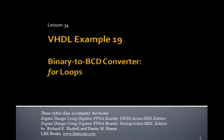This is Lesson 34, VHDL Example 19, and in this example we'll design a binary to BCD converter for any number of bits in the binary number. And to do this, we'll use for loops.